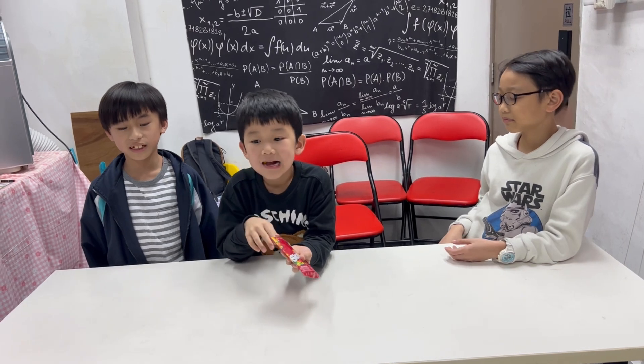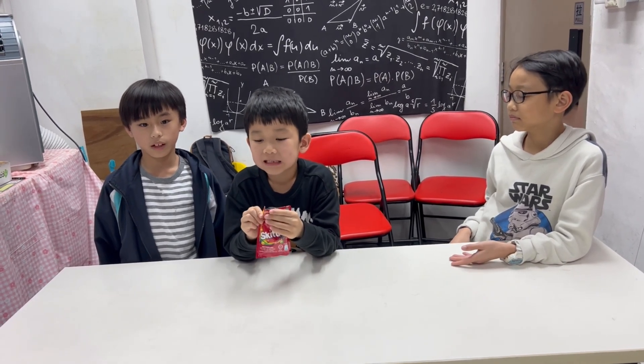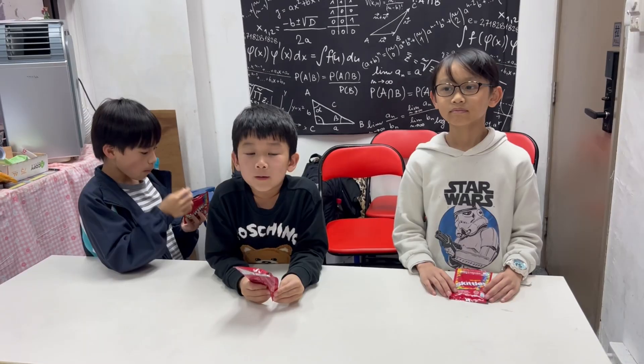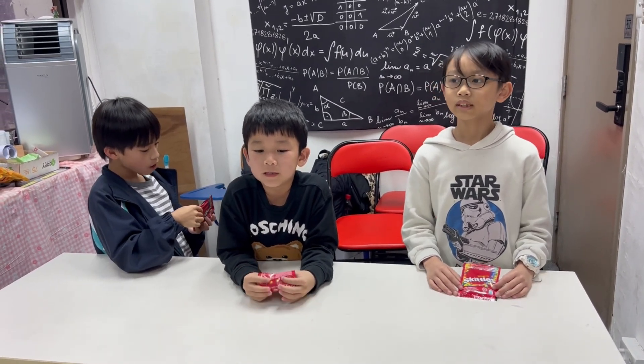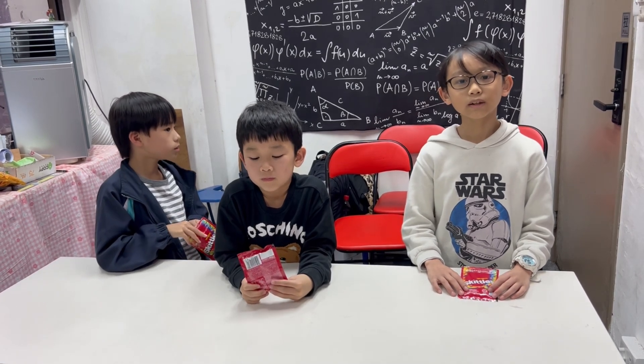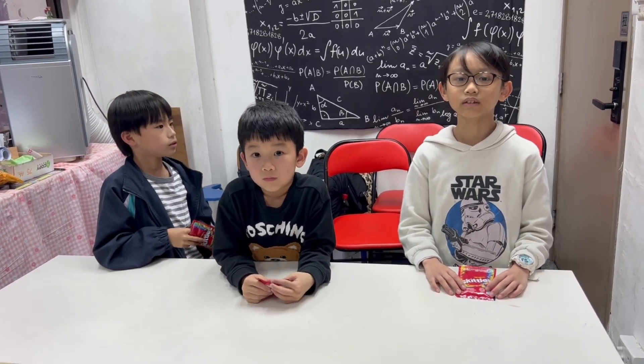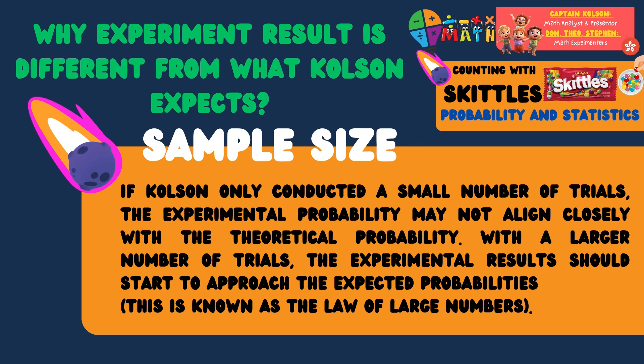The probability calculated is different from the results of the experiment. The main reason why calculated probability may differ from statistical probability is sample size. If Colson only conducts a small number of trials, the experimental probability may not align closely with the theoretical probability. With a larger number of trials, the experimental results should start to approach the expected probabilities. This is known as the law of large numbers.